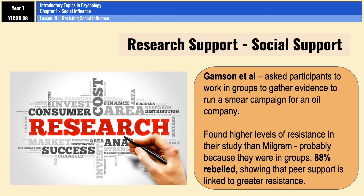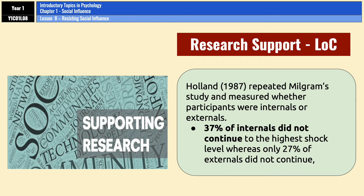There's further research support for social support from Gamson et al, who asked participants working in groups to run a smear campaign for an oil company and found really high levels of resistance — 88% of participants rebelled — showing that peer support is linked to greater resistance. For the locus of control, Holland (1987) repeated Milgram's study and measured whether participants were internals or externals, finding that people who were internal were less likely to continue to 450 volts — a straightforward piece of research support.